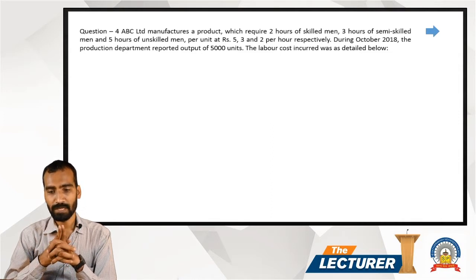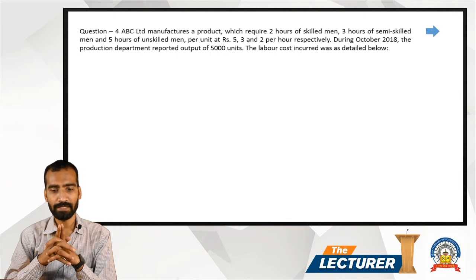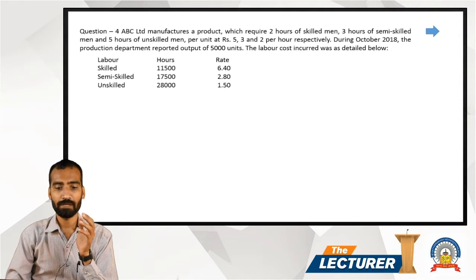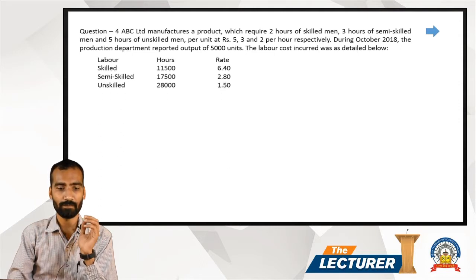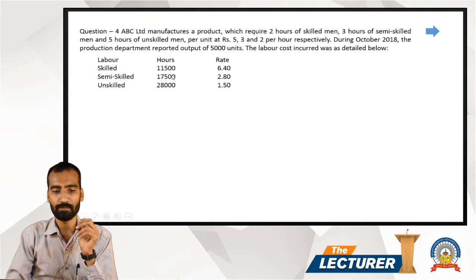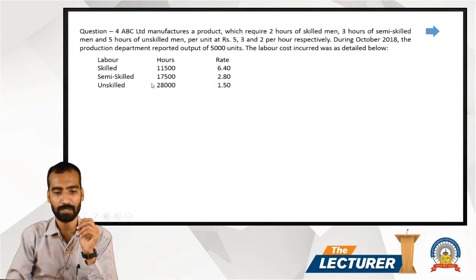During October 2018, the production department reported actual production of 5,000 units. The actual labor cost incurred: skilled labor — 11,500 hours at 6.40 rupees per hour; semi-skilled — 17,500 hours at 2.80 rupees per hour; unskilled — 28,000 hours at 1.50 rupees per hour.